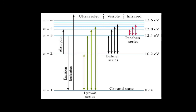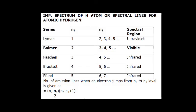Similarly, the Brackett series and Pfund series are also shown in the picture. For the Lyman series, n1 is always equal to one, meaning the electron always jumps to level number one, and n2 can be two, three, four, five, or six and so on. For the Balmer series, n1 is always two, meaning the electron jumps to orbit number two, and the electron can come from orbit number three, four, five, and so on.